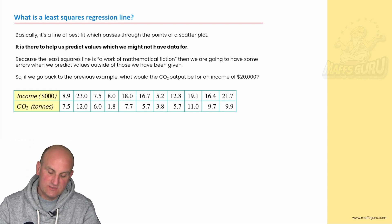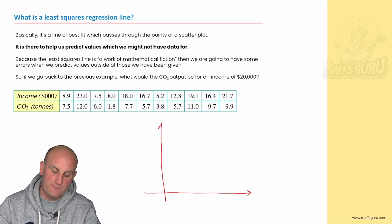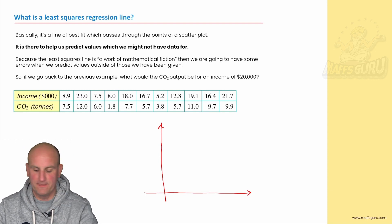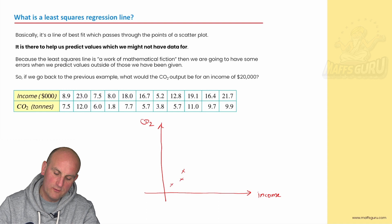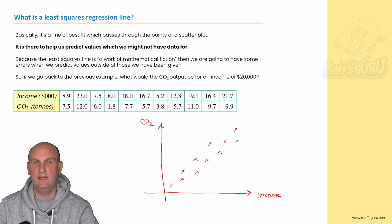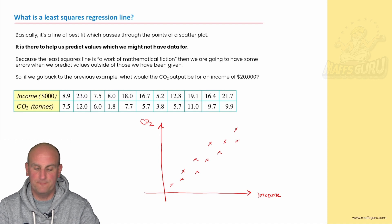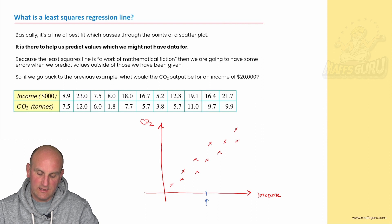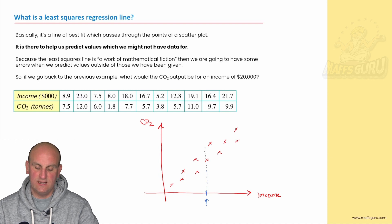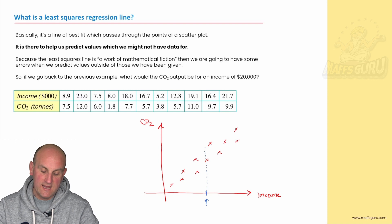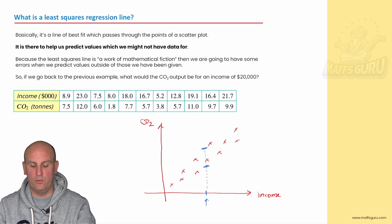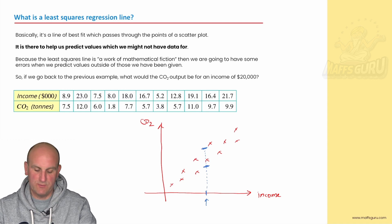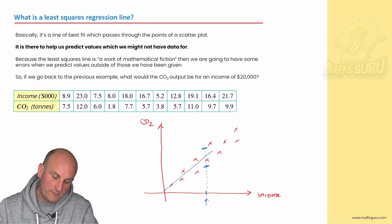A least squares regression line is really what you might have thought of previously as a line of best fit. It's sort of a line of best fit but a little bit better. What we've got here is if we had our income and we have my CO2 and we plotted that as we saw from my scatter plot earlier, this is ultimately what we end up with. I want to be able to use this to predict values. So for example, if I had a value here of income and I go up, what do you notice? It doesn't actually go through a point. I know that my CO2 emission may be somewhere between those two horizontal lines, but where?